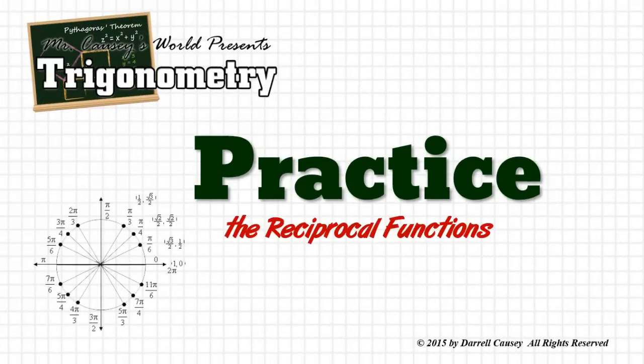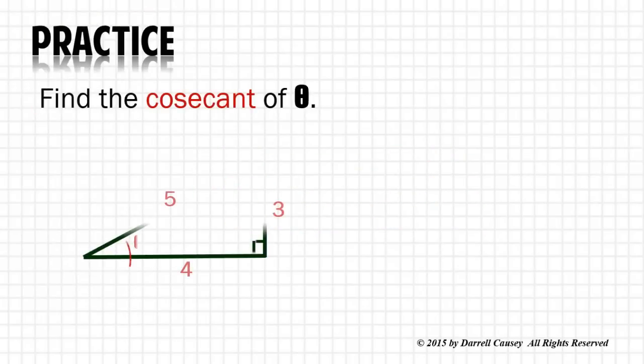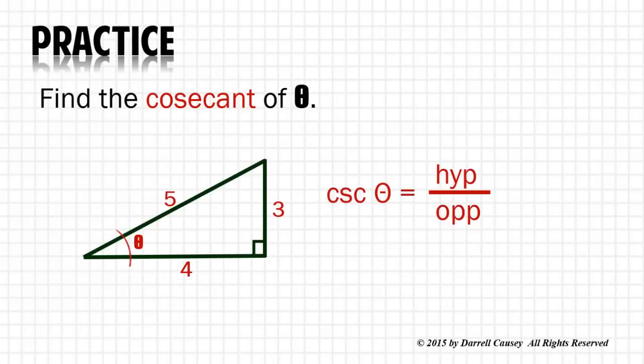Let's practice the reciprocal functions. Reciprocal functions are just the standard functions flipped over. Since cosecant is the reciprocal of sine, we're going to do hypotenuse over opposite, which is 5 thirds.